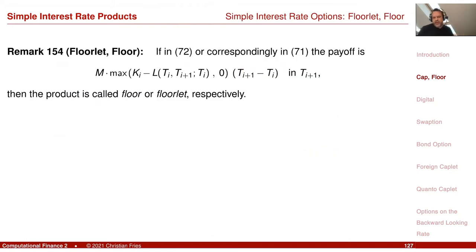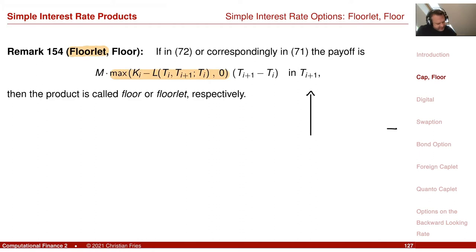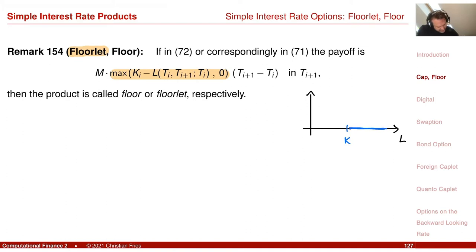You can also look the other way around: you get the maximum of K minus L — I'm just flipping the two inside — and this is called the Floorlet. The Floorlet pays maximum(K minus L, 0). Drawing the payment at time Ti+1 as a function of L: we pay K minus L whenever L is below K, and zero otherwise.